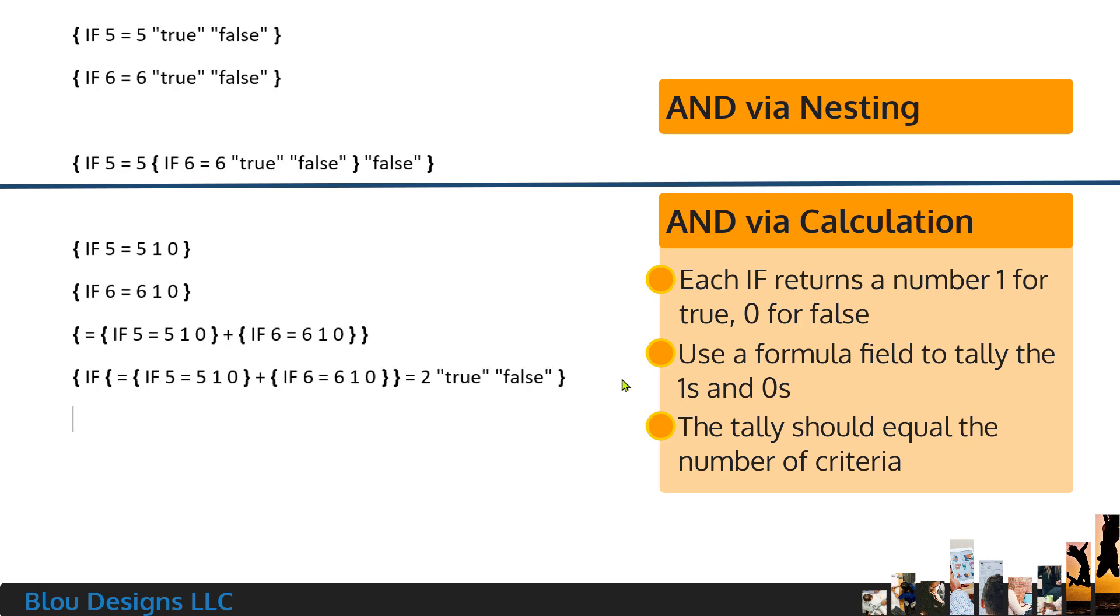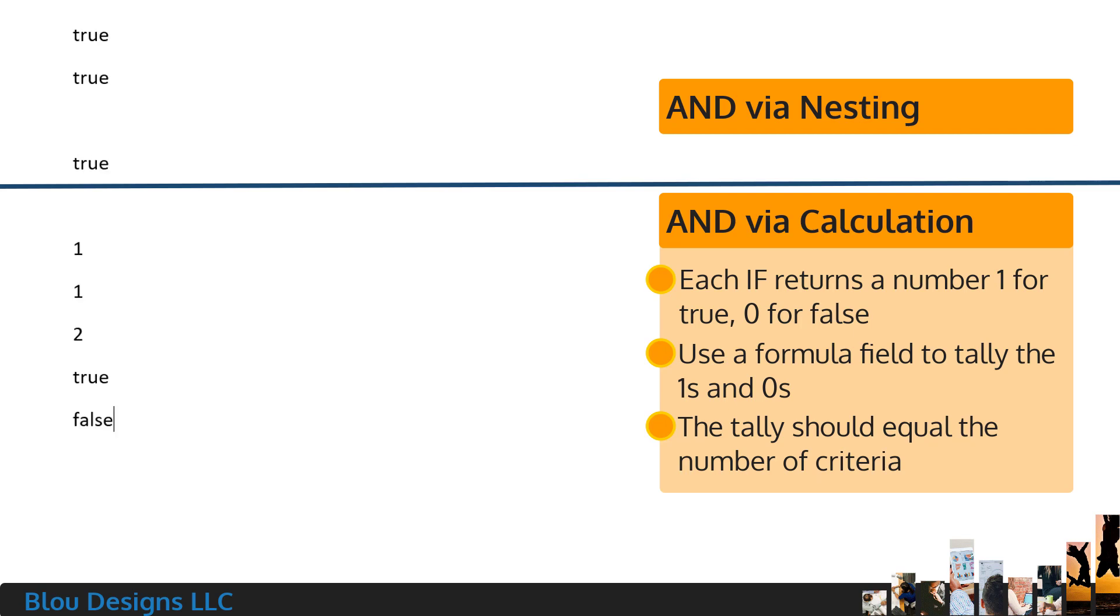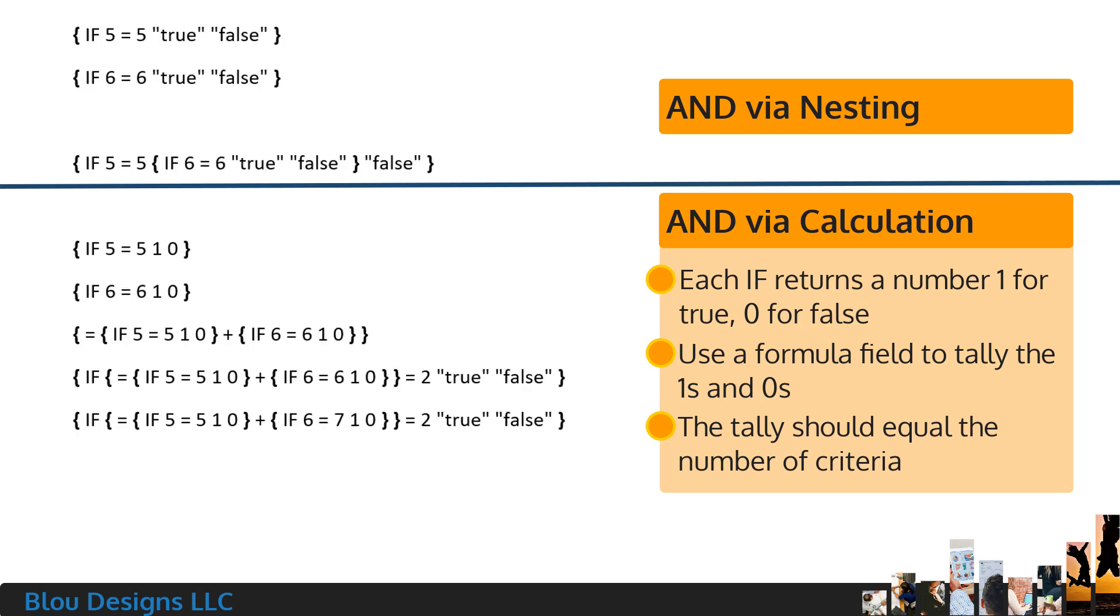If I make a copy of this and change the 6 equals 6 test to read 6 equals 7, which is false, you can see that the calculation would now evaluate to 1, which is 1 plus 0, which is not equal to 2, and so the if-then-else returns the false text. So that's how to use a formula calculation to check if multiple criteria are true at the same time.